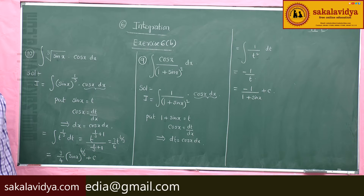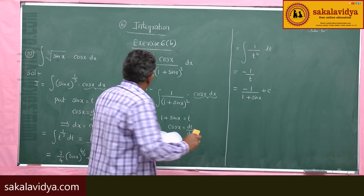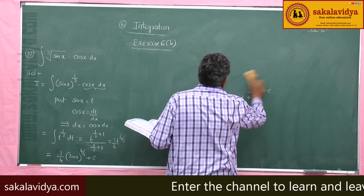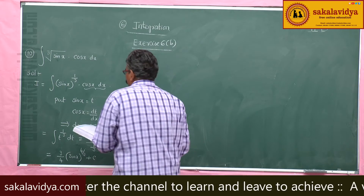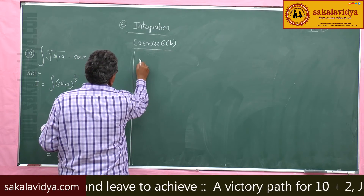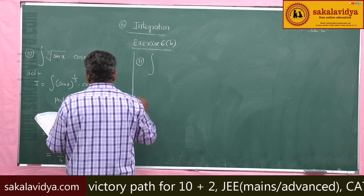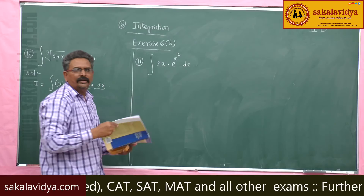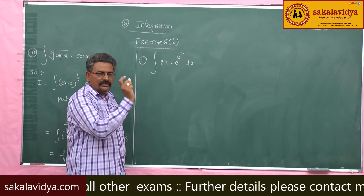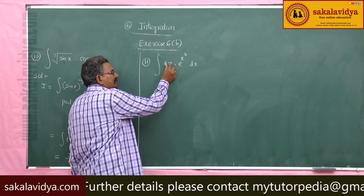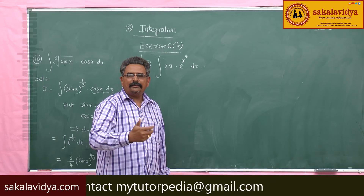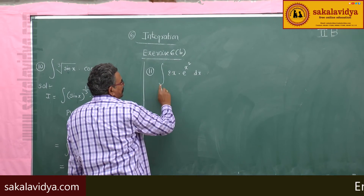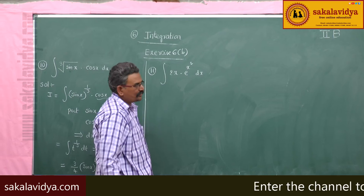Let us move to the next problem, that is the eleventh problem. Evaluate the integral of 2x times e to the power x square dx. Just observe that 2x is part of the derivative of x square, since d by dx of x square equals 2x. So, this problem can be solved by substitution.